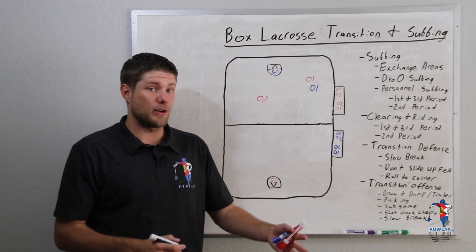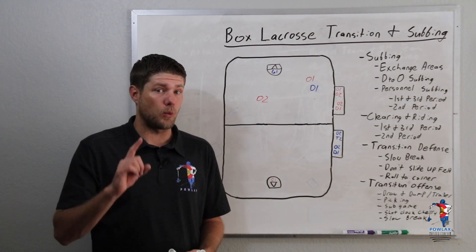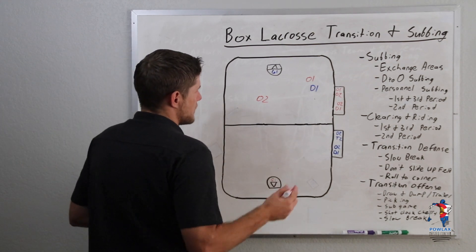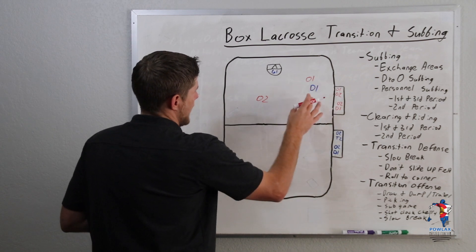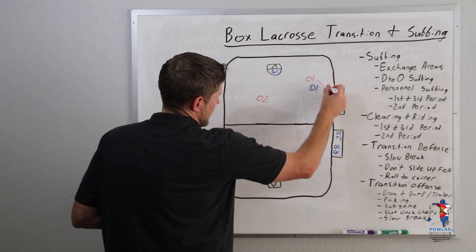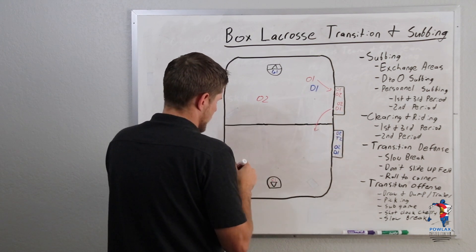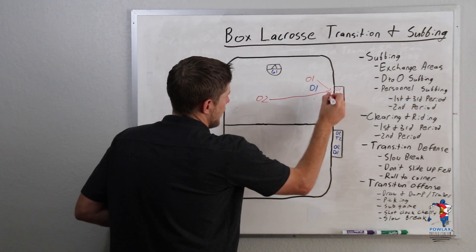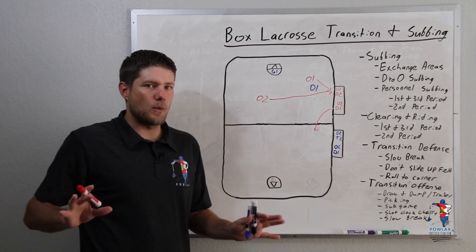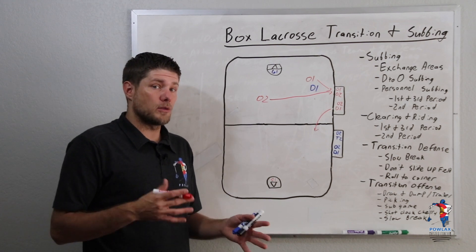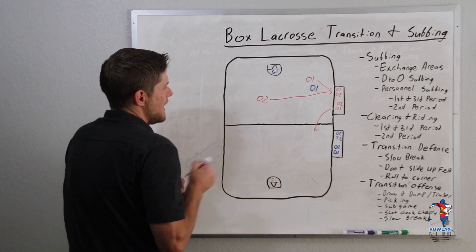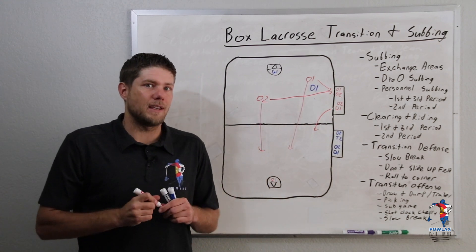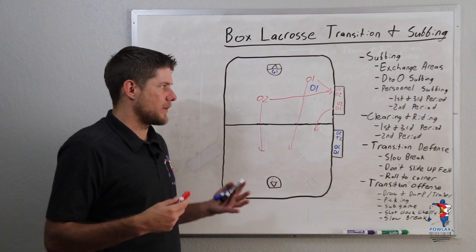If we want to move to personnel subbing in the second period, there's just one big rule: as we are riding, moving from offense to defense, the only players who can sub out are the players who are near the bench. If O2 decides he's going to come from the opposite side of the floor to try to run off and get the other player on, it's going to take way too long. For the most part, I always run the D-to-O subbing pattern in the second period because it's too risky to have a player thinking he's going to sub out and then giving up offensive transition.